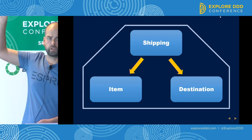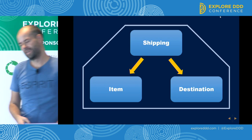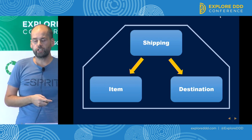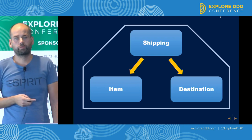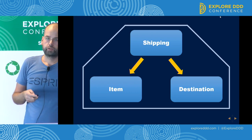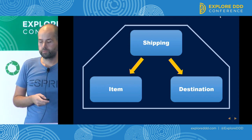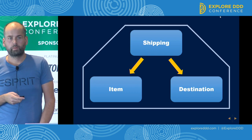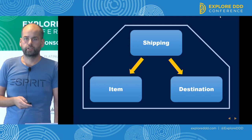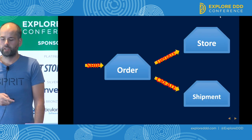Everybody knows what an aggregate is. That's a shipping aggregate. It contains all the information related to shipping an order of pierogi. It has its root on top and it has some items that are going to be shipped and the destination. That's our nice aggregate.